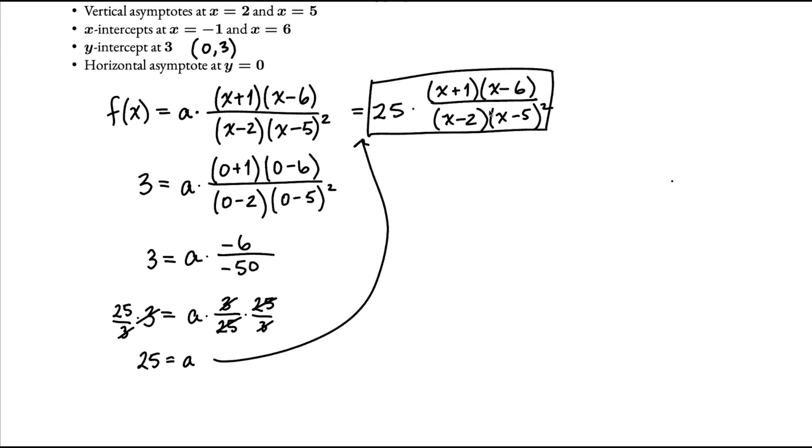Now this is not the only function that has those properties. Remember that I just chose to put this square on the x minus 5. I could have chosen either one of these to square. I also could have chosen any exponent higher than 1 to be on either of those. And so whatever exponent I choose and which factor I put it on, that's going to change what this a comes out to be. So there are actually an infinite number of possibilities of rational functions that have these properties.